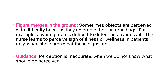Figure merging in the ground — sometimes objects are perceived with difficulty. The figure-ground relationship is very important in the principles of perception. The background and the figure should be strong enough to perceive properly. For example, in a white wall it is difficult to find a white dot, but a black dot on a white wall you can easily perceive. If the figure is dark, the background should be light enough in order to have better perception.